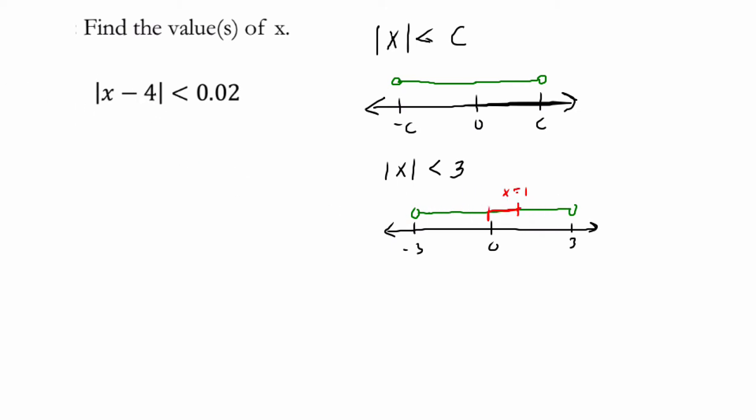And that also applies here. In this problem, we can just say that the distance of this thing is less than 0.02. So how do we reconcile all this?